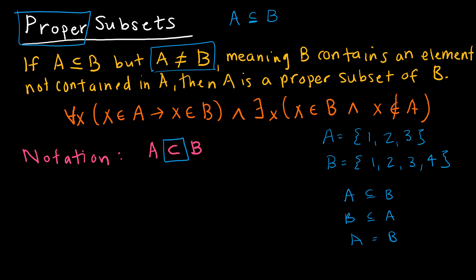However, if B is now 1, 2, 3, 4, A is still a subset of B, but B is not a subset of A, these are not equal, and therefore A is a proper subset of B. And it's proper because we've got this one little guy in set B that is not contained in A. And again, here is the longer version using our predicate logic for all X's. If X belongs to A, then X belongs to B, and there exists some element that belongs to B and that does not belong to A. So that is a proper subset.